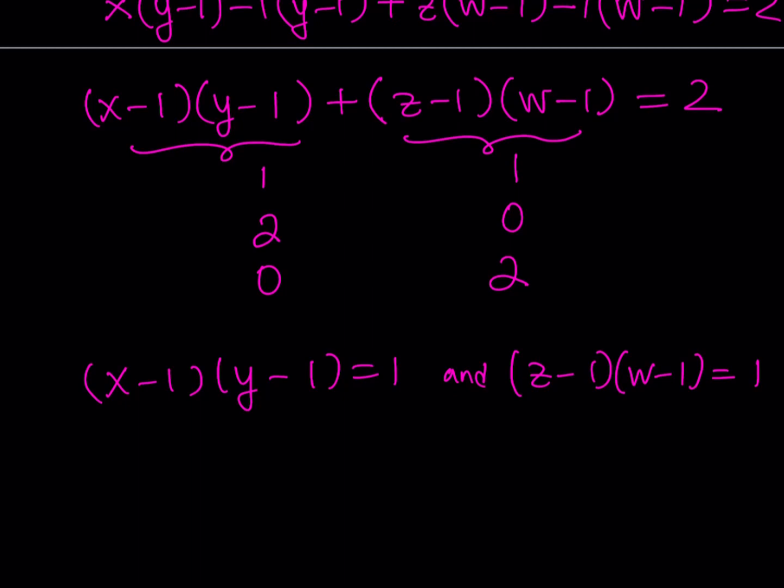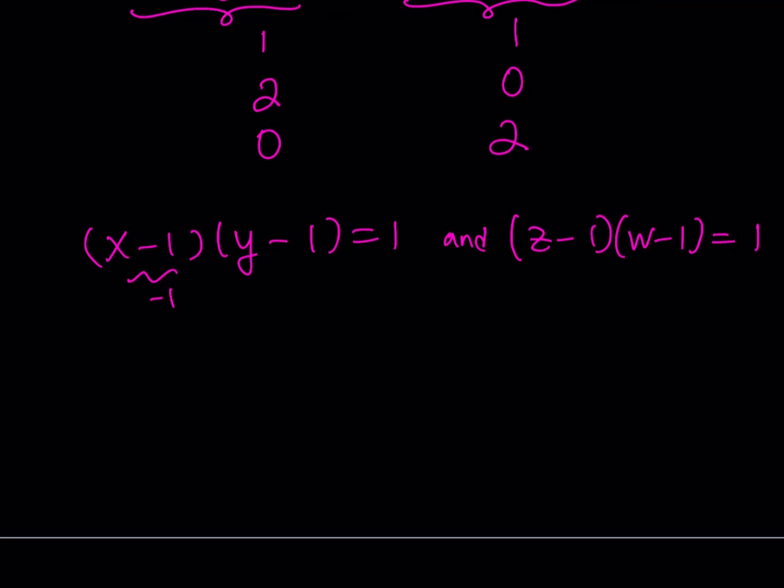Now how can you get 1 from a product like this? Well, either you're going to have to multiply 1 times 1, or negative 1 times negative 1. But in order for this to be negative 1, you would have to use x equals 0, but you can't use 0 because we're looking for positive integer solutions. Therefore, you're only going to go with the positive ones. For example, this should give you x minus 1 is equal to 1, y minus 1 is equal to 1, z minus 1 is equal to 1, and w minus 1 is equal to 1.